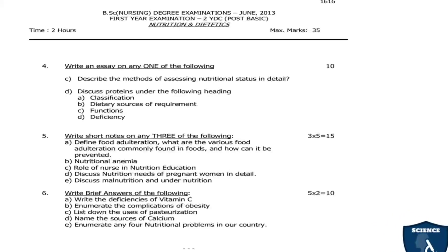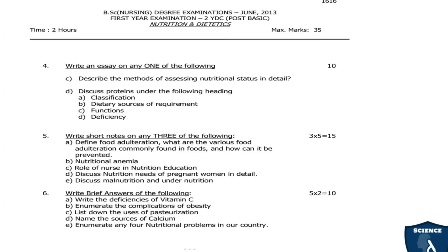Moving on to June 2013 question paper. First question: Describe the methods of assessing nutritional status in detail. Second question: Discuss proteins under the following headings — classification of proteins; dietary sources and requirements of proteins; functions of proteins; deficiency of proteins. Out of these two, answer any one — 10 marks. Short notes (any 3 of 5): define food adulteration and how it can be prevented; nutritional anemia; role of nurse in nutritional education; nutrition needs of pregnant women; malnutrition and undernutrition. Brief answers (2 marks): deficiencies of vitamin C; complications of obesity; uses of pasteurization; sources of calcium; enumerate any 4 nutritional problems in the country.